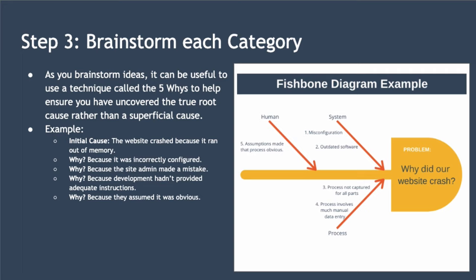Why did it run out of memory? Because it was incorrectly configured. And why was that? Because the site administrator made a mistake. And why did he make a mistake? He made a mistake because the development team hadn't provided adequate instructions. And why was that? Because they assumed it was obvious. In this example, we asked why four times and were then unable to delve any deeper. By using the five whys, we shifted our thinking from the website crashed because it ran out of memory, to realizing it may have been a human error — an engineer assumed something was obvious when to the site administrator, it wasn't obvious at all. As you brainstorm all causes category by category, you update your fishbone template, and it will end up looking something like you see here, except there will probably be many more causes.